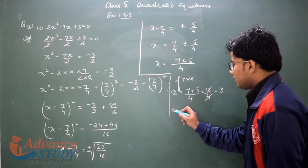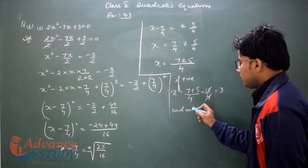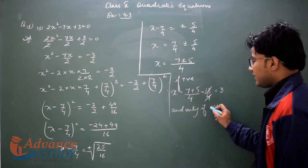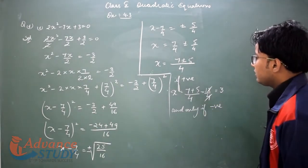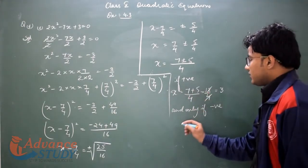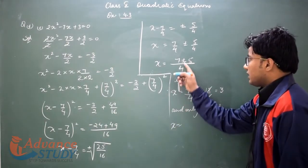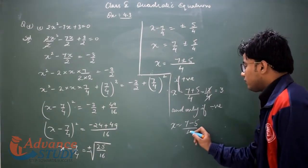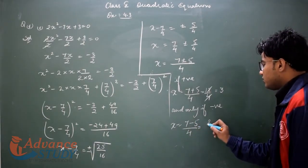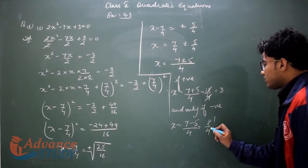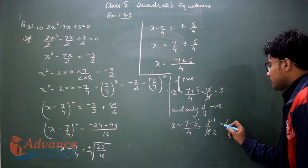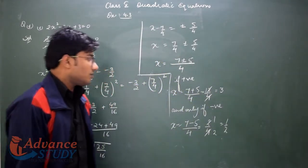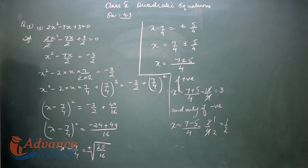For the second root, we use the minus sign. x equals 7 minus 5 upon 4. 7 minus 5 is 2, so 2 upon 4 equals 1 upon 2. So the answer is x = 1/2. These are the two roots of this equation by the method of completing the square.